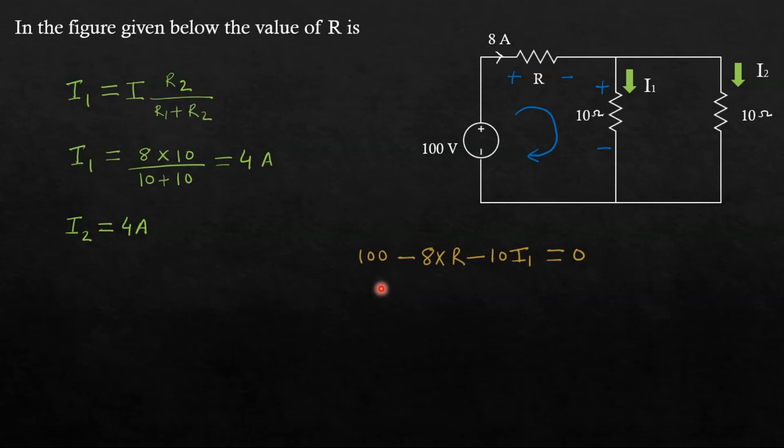Now simplify this. Put the value of I1, that is 100 minus 10 times I1. I1 value is 4, so 10 times 4 equals 8R, which will come out to be 8R equals 60. Now R equals 60 divided by 8, that is 7.5 Ohm. So this is the value of R.